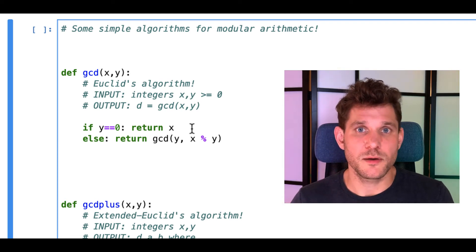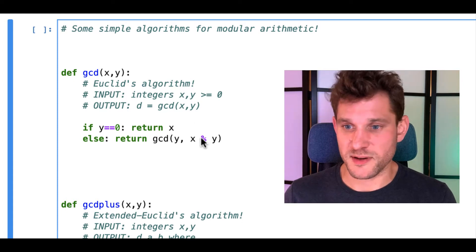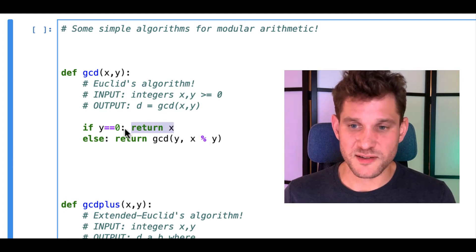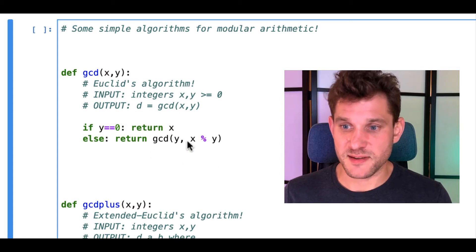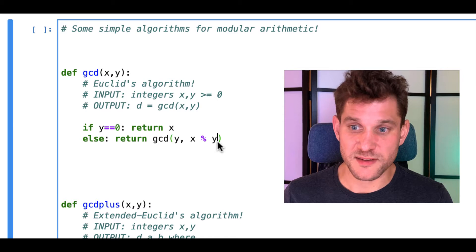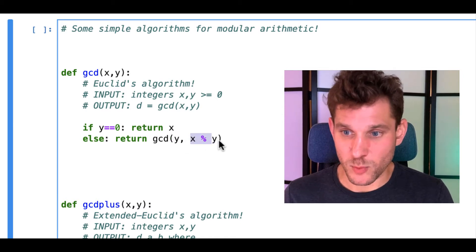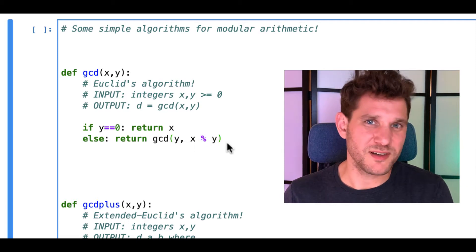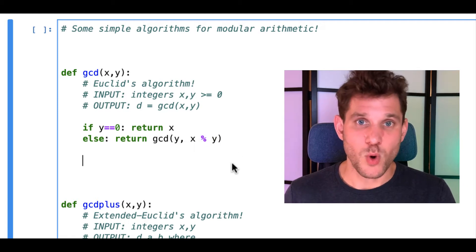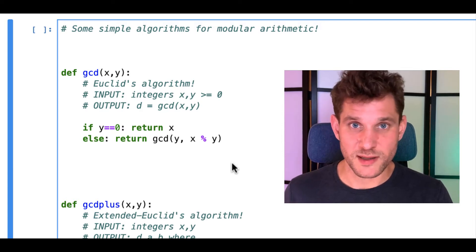We talked about computing the greatest common divisor of two integers x and y. This is really a very simple algorithm. It simply checks if one of the integers is zero, and then if it isn't, it takes x mod y — this percent symbol is just mod in Python — and does the GCD of y and x mod y. We discussed why this algorithm works and why we can be sure that it computes the GCD of x and y quickly.